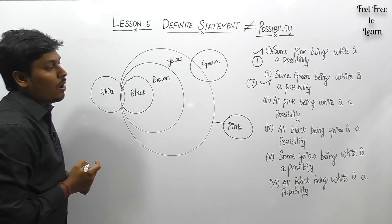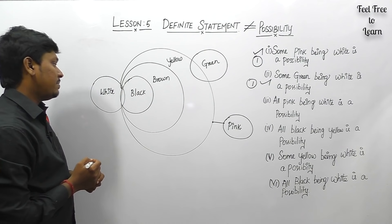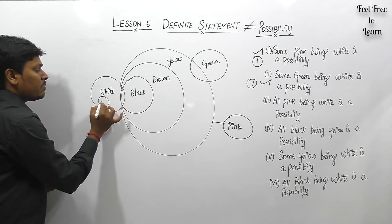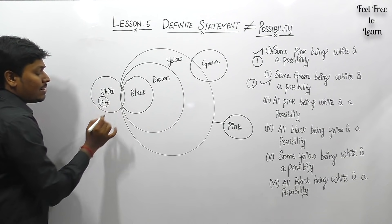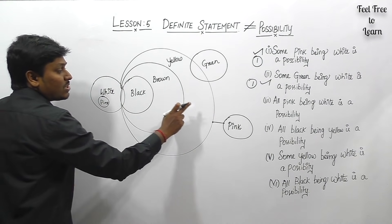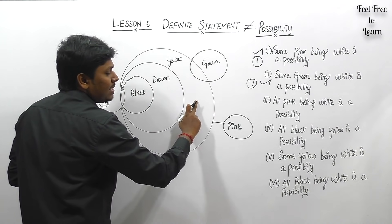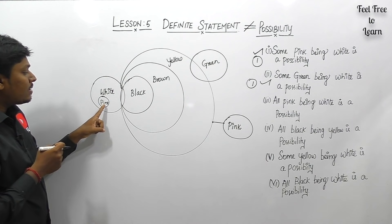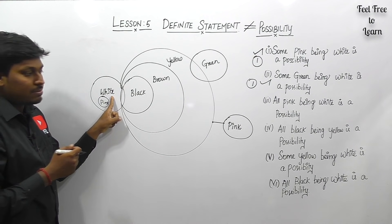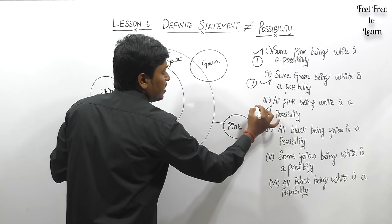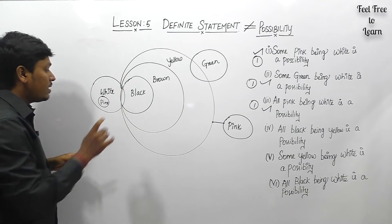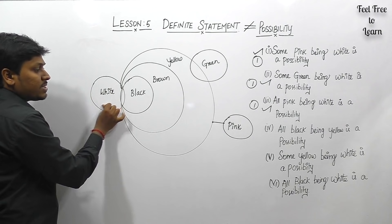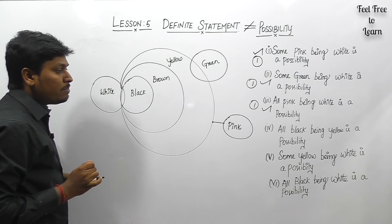Conclusion three: 'all pink being white is a possibility.' We can draw pink connected to white because there is no required link between yellow and pink. If we draw pink inside white, then all pink being white is possible. So this follows according to case number one.